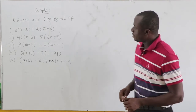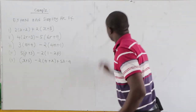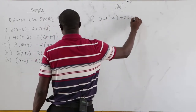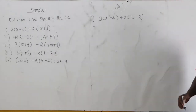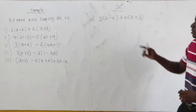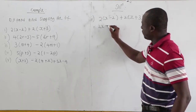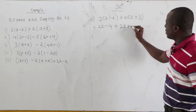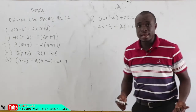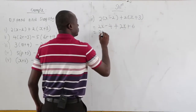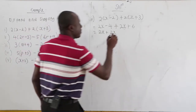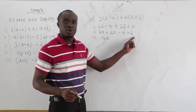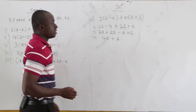Now expand and simplify the following. First: 2 times x minus 2 plus 2 times x plus 3. Applying the distributive rule: 2 times x equals 2x, 2 times negative 2 equals negative 4. Then 2 times x equals 2x, and 2 times 3 equals 6. Grouping like terms: 2x plus 2x equals 4x, and negative 4 plus 6 equals 2. So the answer is 4x plus 2.